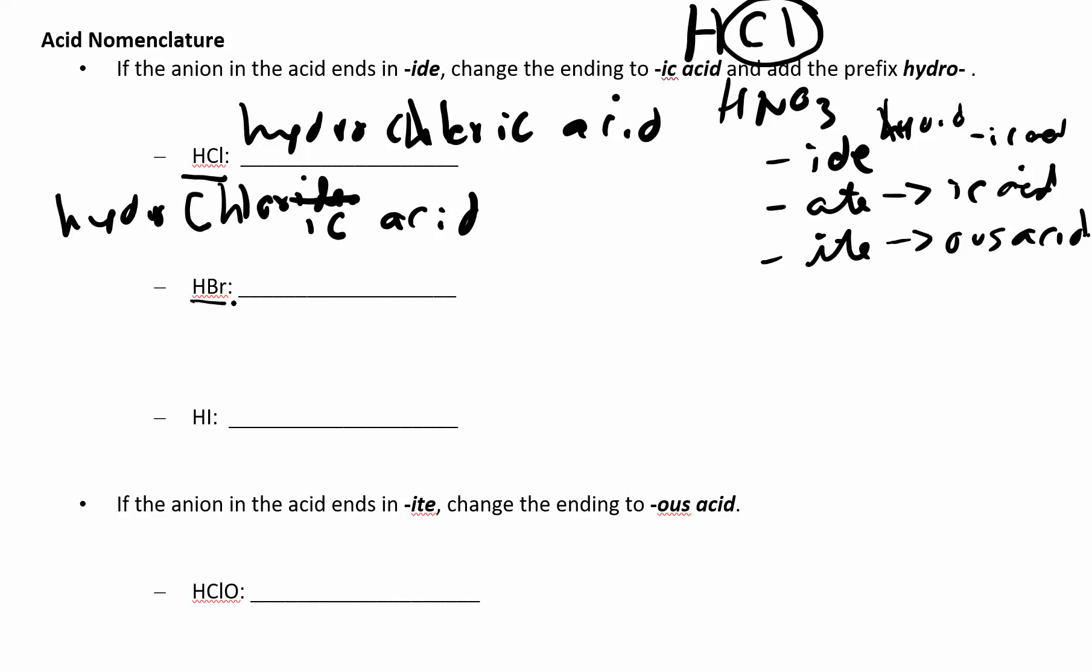Now HBr - the H is telling you it's an acid. The Br is bromide. Br⁻ is bromide. So you drop the -ide, change it to -ic acid, and then also add a prefix hydro. You end up with hydrobromic acid. Try this last one: HI comes from iodide. I⁻ is iodide. Change it to -ic acid and add the hydro, and you have hydroiodic acid.